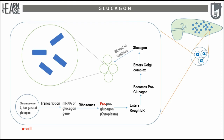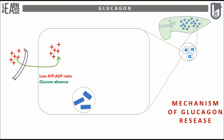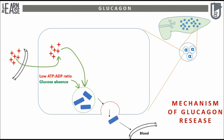Now let us see how glucagon is released from the alpha cell into the blood. Briefly, when the concentration of free amino acids in blood increases due to protein catabolism during fasting, they enter the alpha cells. Also during fasting, the ATP levels in the alpha cell are low. Both these conditions will constitutively induce vesicles containing glucagon to fuse with the cell membrane, and glucagon is released into the blood. This is just the outline of the mechanism — the detailed mechanism is not yet known.